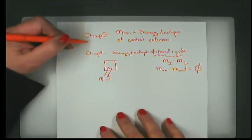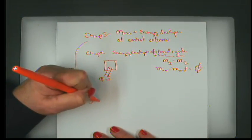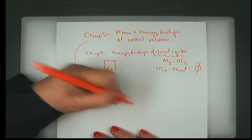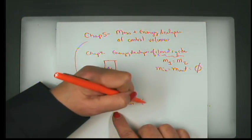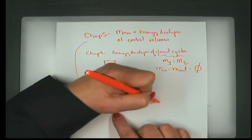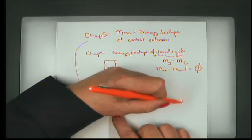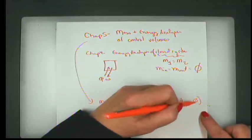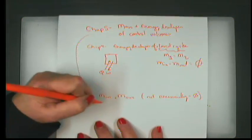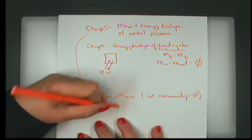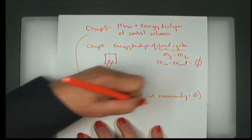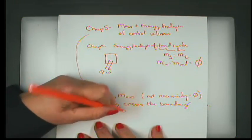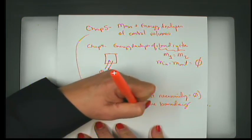In a control volume, this is no longer true. We can have some mass going in and some mass going out — those may or may not be equal to zero. You can have zero or one of them be equal to zero, or just mass going in or mass going out. Energy crosses the boundary as heat, work, and with mass.